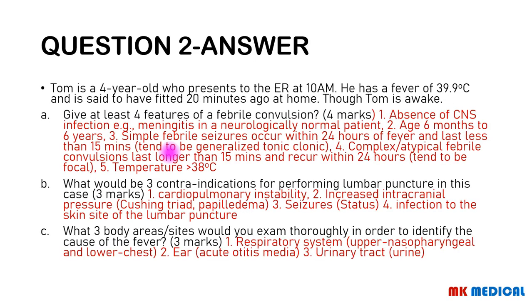Here comes the answer. Features of a febrile convulsion: number one, there should be an absence of CNS infection, like meningitis, in a neurologically normal patient. Second, the age should be between 6 months and 6 years. Third, the temperature should be greater than 38 degrees. A simple febrile seizure occurs within 24 hours of the fever and lasts less than 15 minutes — these tend to be generalized tonic-clonic. Complex or atypical febrile convulsions last longer than 15 minutes, recur within 24 hours, and tend to be focal.